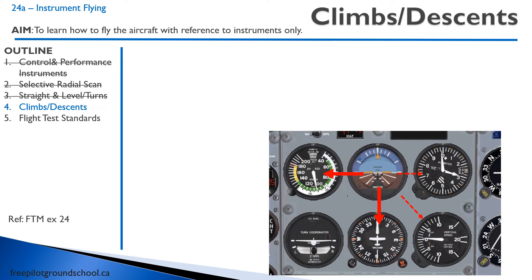For climbs and descents, the attitude indicator is still our focus, but we're constantly referencing the airspeed indicator and heading indicator. So the scan goes: attitude indicator, airspeed, attitude, heading, attitude, airspeed. Then every so often, we look at the altimeter and vertical speed indicator — especially as we're approaching our level-off altitude.